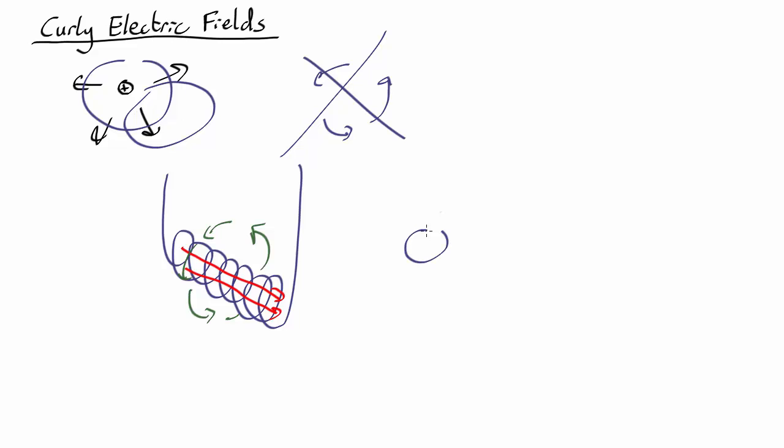Now let's say we have a solenoid with a magnetic field pointing out of the screen, up towards us. And let's say that magnetic field is getting stronger. In that case the curly electric field will point this way.